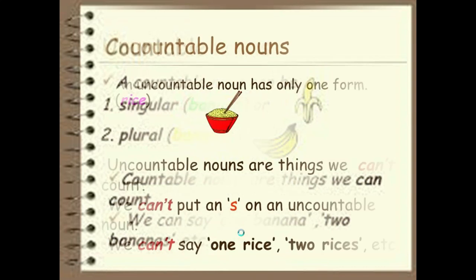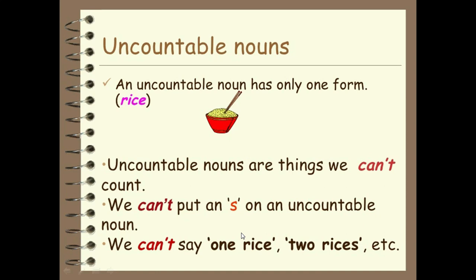Then what are uncountable nouns? Uncountable nouns are the nouns that you cannot count. Although they look like they are in a great amount, but still you cannot count them. For example, rice. You can see that an uncountable noun has only one form. We can't say 'rices' — no, it will be wrong. Uncountable nouns are things we can't count. We can't put an S on an uncountable noun. We can't say one rice, two rices — this is wrong. Uncountable nouns are the nouns which cannot be counted, although they may exist in a greater amount, but it is impossible to count them.